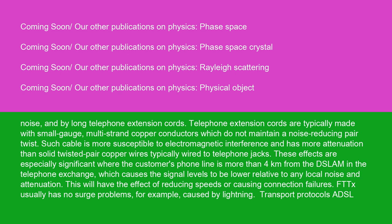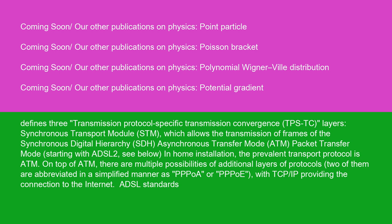FTDX usually has no surge problems, for example caused by lightning. Regarding transport protocols, ADSL defines three transmission protocol-specific transmission convergence, TPSTC, layers: Synchronous Transport Module, STM, which allows the transmission of frames of the Synchronous Digital Hierarchy, SDH; Asynchronous Transfer Mode, ATM; and Packet Transfer Mode, starting with ADSL2. In home installation, the prevalent transport protocol is ATM. On top of ATM, there are multiple possibilities of additional layers of protocols. Two of them are abbreviated as PPPoA or PPPoE, with TCP/IP providing the connection to the internet.